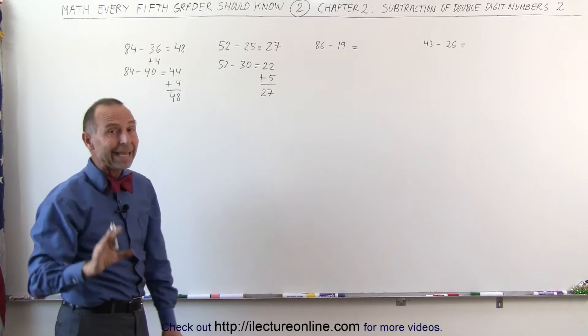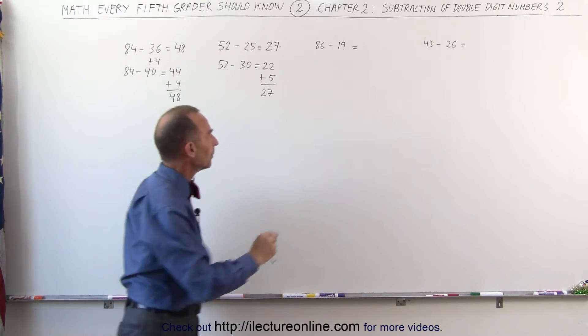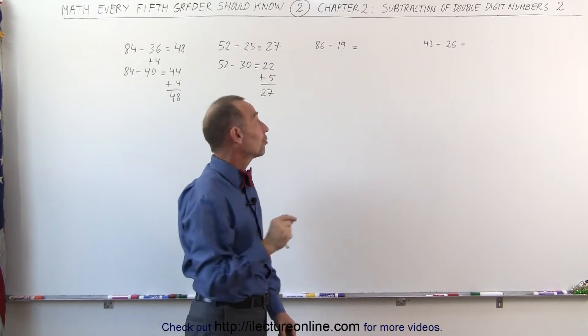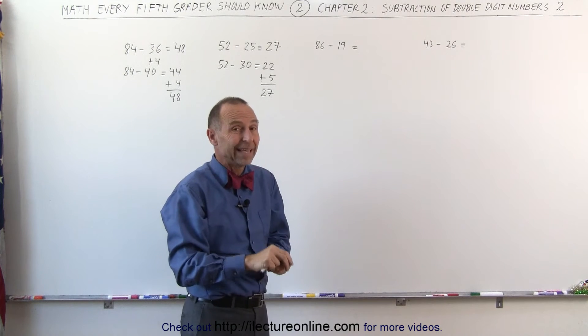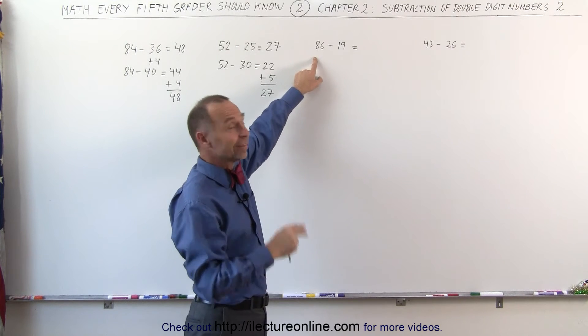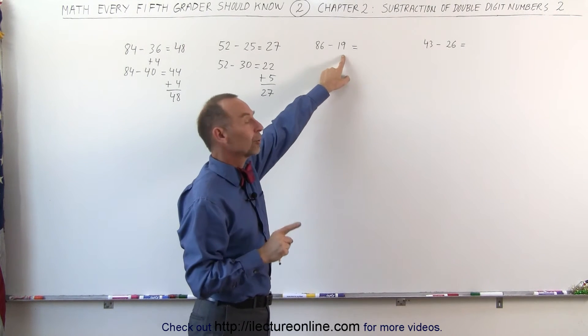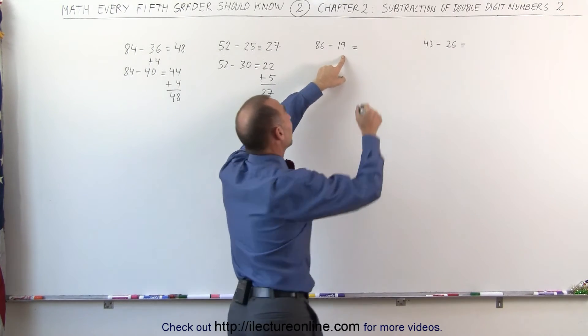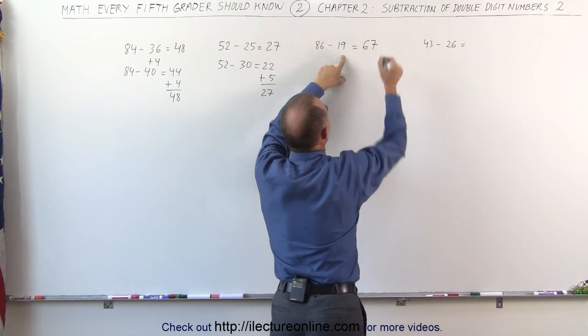Now let's see if we can do that without writing anything down at all. 86 minus 19. What I'm going to do instead is subtract 20 from 86. 86 minus 20, 8 minus 2 is 6. So 86 minus 20 is 66. But remember, I subtracted one more. So I have to add one more to the 66. That gives me 67. That is the answer.